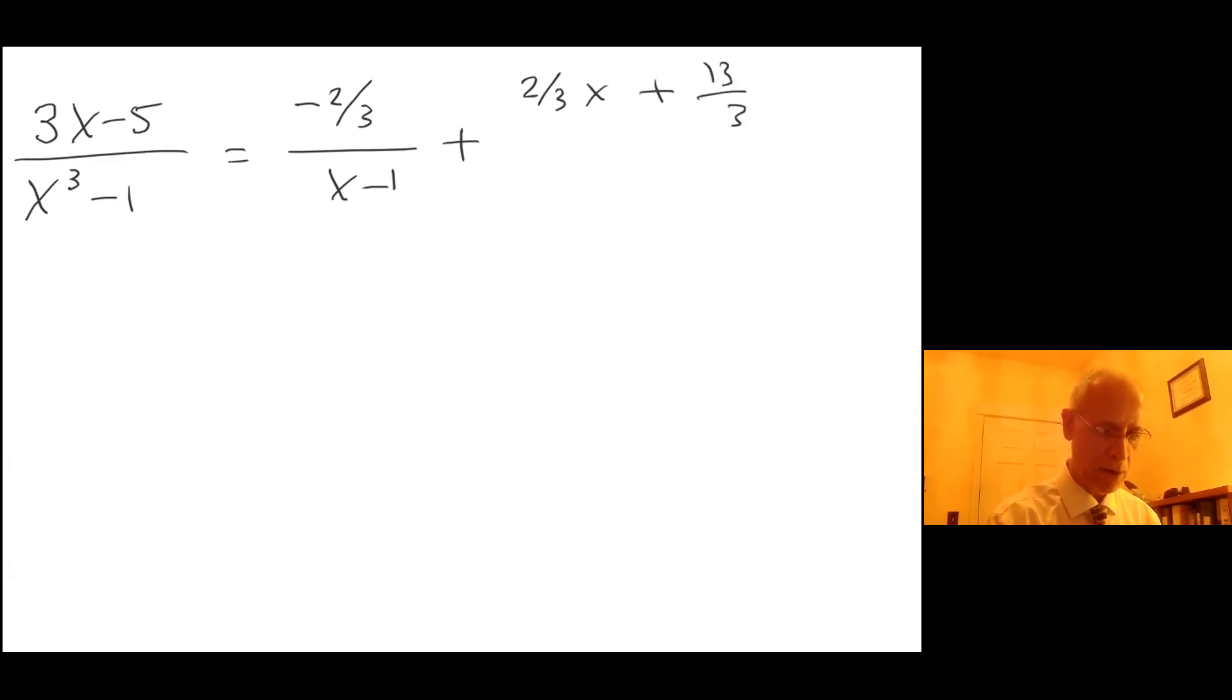That was a good example for the third case. When we decomposed and factored the denominator of the original rational function, we had one of the factors was an irreducible quadratic right here, and so that constitutes Case 3.